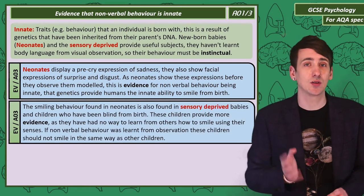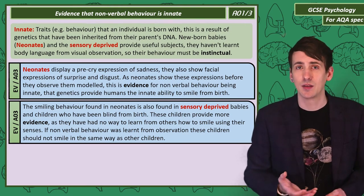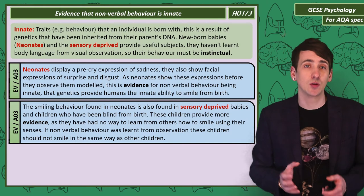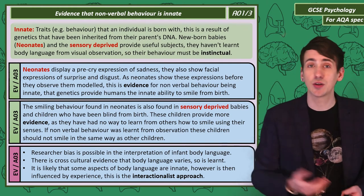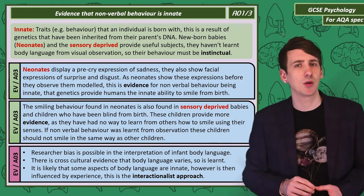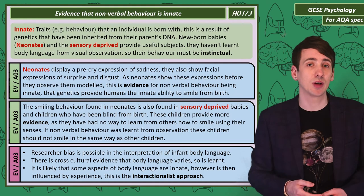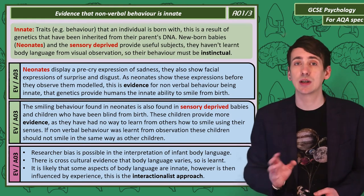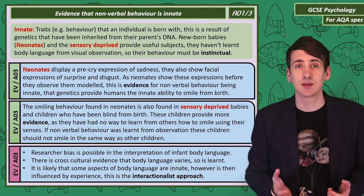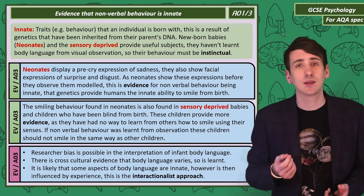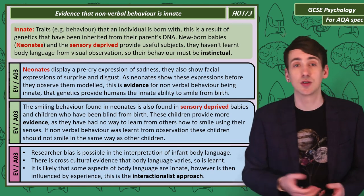The same expressive behaviour is found in studies of sensory-deprived children. If facial expressions were learned through imitation, these children shouldn't be able to use the same facial expressions as other children. Problems in this research include potential researcher bias, with researchers interpreting babies' body language in ways that support their theories, and counter-evidence of cross-cultural differences suggesting body language is learned rather than inherited. An interactionist approach may better explain body language — we're born with some innate traits, but these adapt in response to experience.